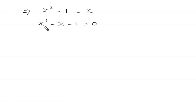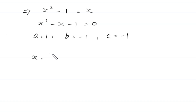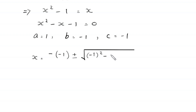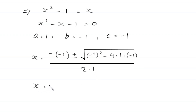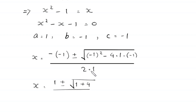This is a quadratic equation that is not factorable, so we use the quadratic formula. Here a equals 1, b equals negative 1, and c equals negative 1. By the quadratic formula, x equals negative b plus or minus square root of (b squared minus 4ac) over 2a, which gives x equals 1 plus or minus square root of (1 plus 4) over 2, simplifying to x equals (1 plus or minus square root of 5) over 2.